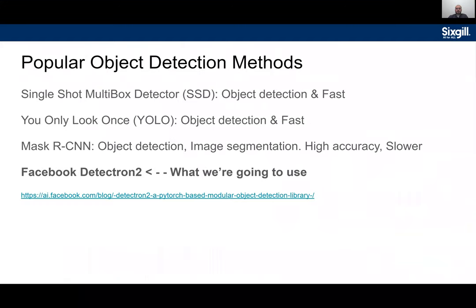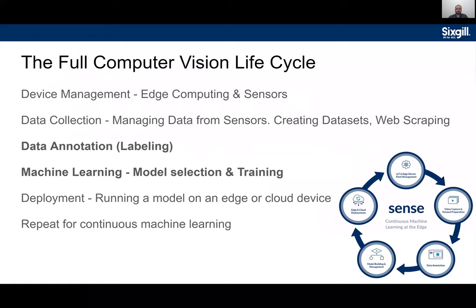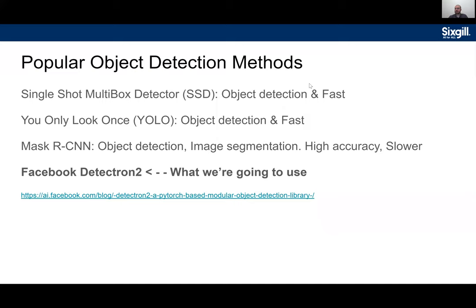The best model really depends on your use case. Faster Mask RCNN may be more accurate, but if you're deploying on a Raspberry Pi with a GPU or a TPU you might need something like YOLO or SSD. There's also an underlying classifier choice — like ResNet-50, VGG, or MobileNet — these are different convolutional neural networks on the backend combined with the detection method, so there are actually multiple architectural choices depending on what you're trying to do.